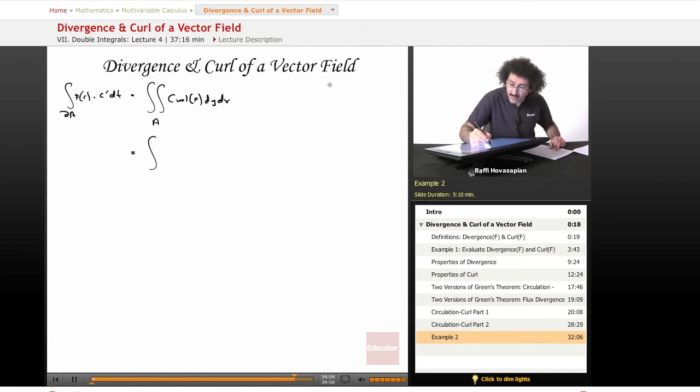let me go ahead and draw this region here. This is an ellipse like that. This is minus 4, this is 4. This is 2, this is minus 2. So x, we're going to go from minus 4 to 4. Again, we're solving a double integral. We need to find the region over which, that's what a double integral is. x is going from minus 4 to 4, right?